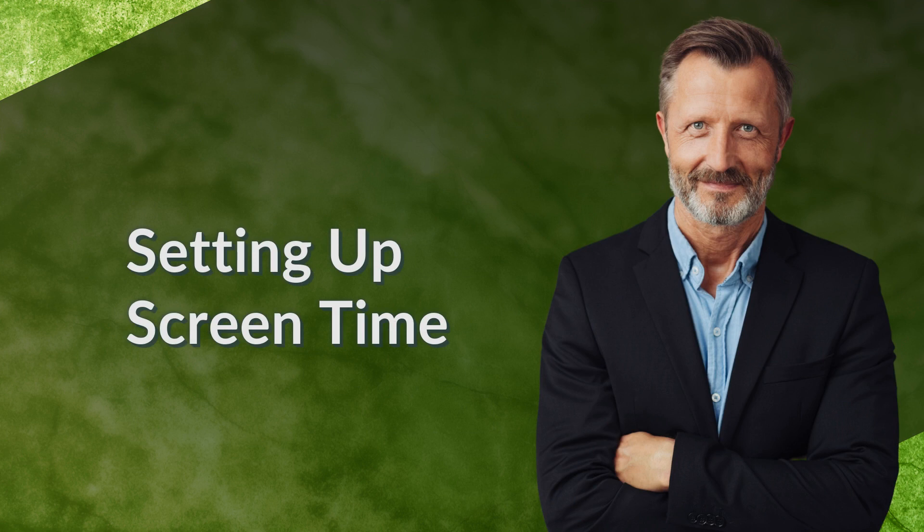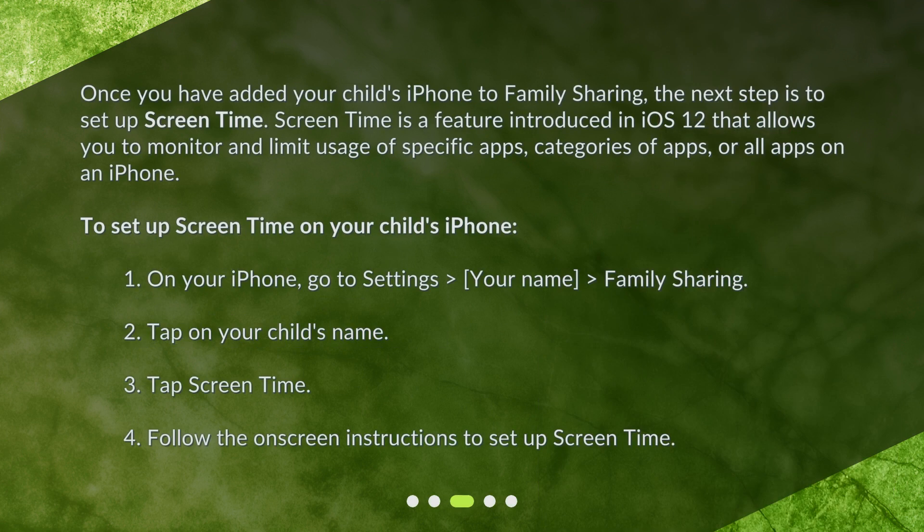Setting up Screen Time. Once you have added your child's iPhone to Family Sharing, the next step is to set up Screen Time. Screen Time is a feature introduced in iOS 12 that allows you to monitor and limit usage of specific apps, categories of apps, or all apps on an iPhone. To set up Screen Time on your child's iPhone, on your iPhone go to Settings, then your name, then Family Sharing.